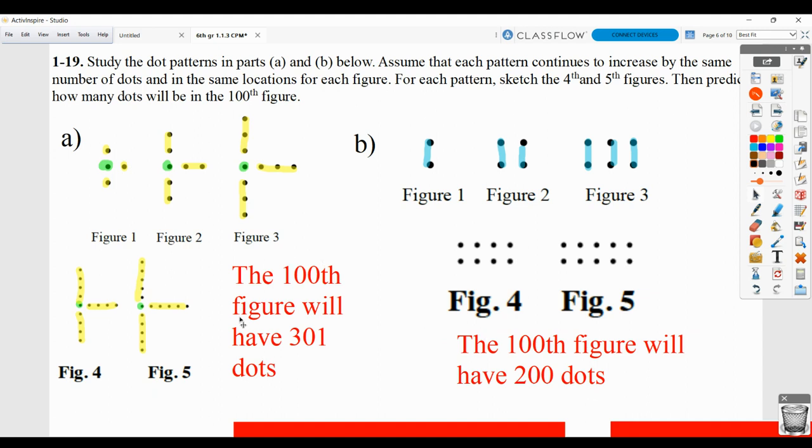Make sure you also explain how you got that, not just write that down. That here the 100th figure had 301 dots because it had 100 above, 100 to the right, 100 below, and the one in the middle. And that here it had 200 dots because it has 100 columns of two dots each that are vertical from each other.